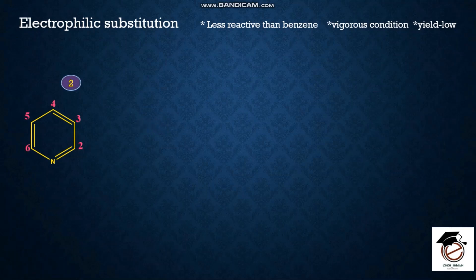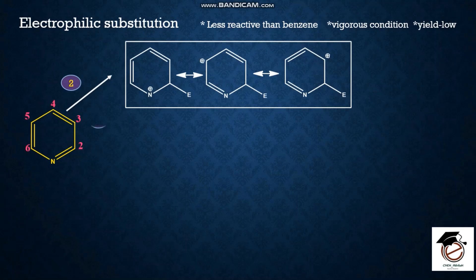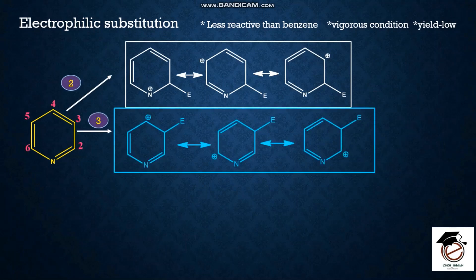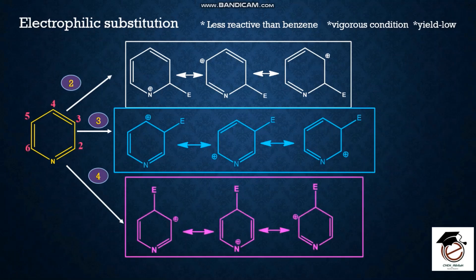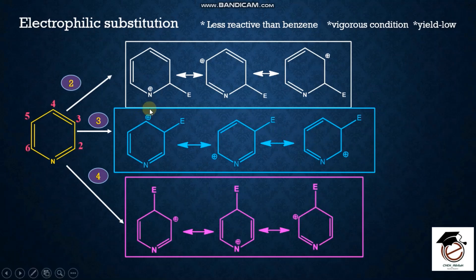The resonating structures are considered. At the second and fourth positions, there are more resonating structures available and they are the same. At the third position, the number of resonating structures is comparatively lower and they are less stable, energetically less favorable.